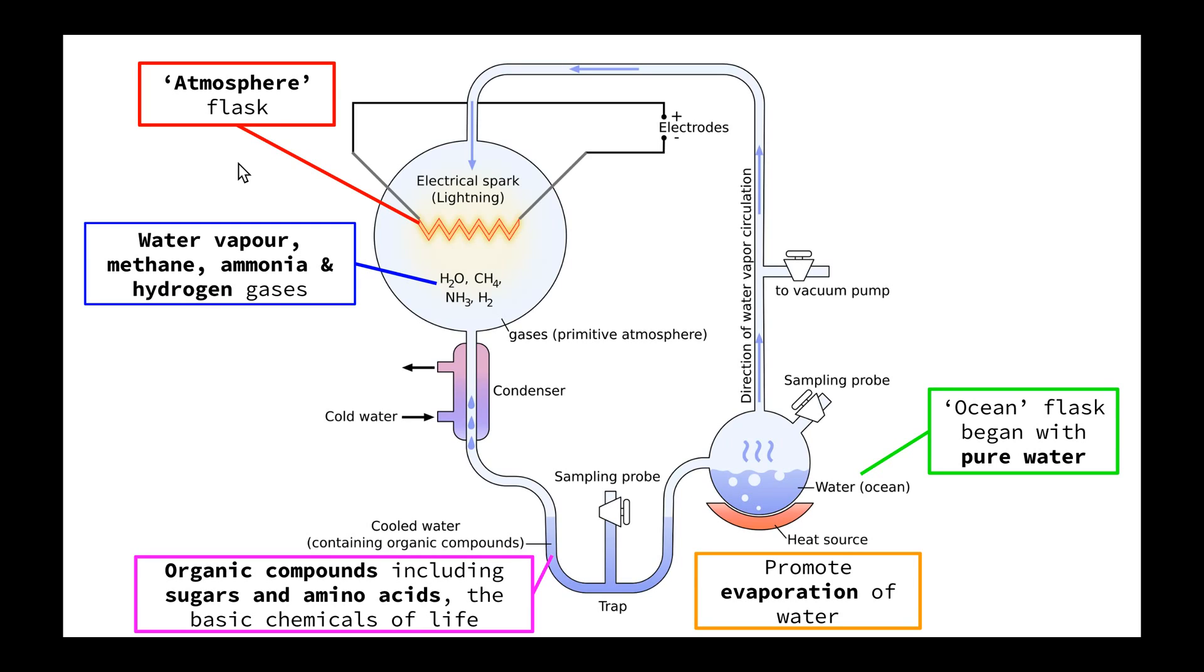In particular, water vapor which came from the evaporation of water in our ocean flask, methane, ammonia, and hydrogen gas, which as we've already said, we know were present during early Earth.